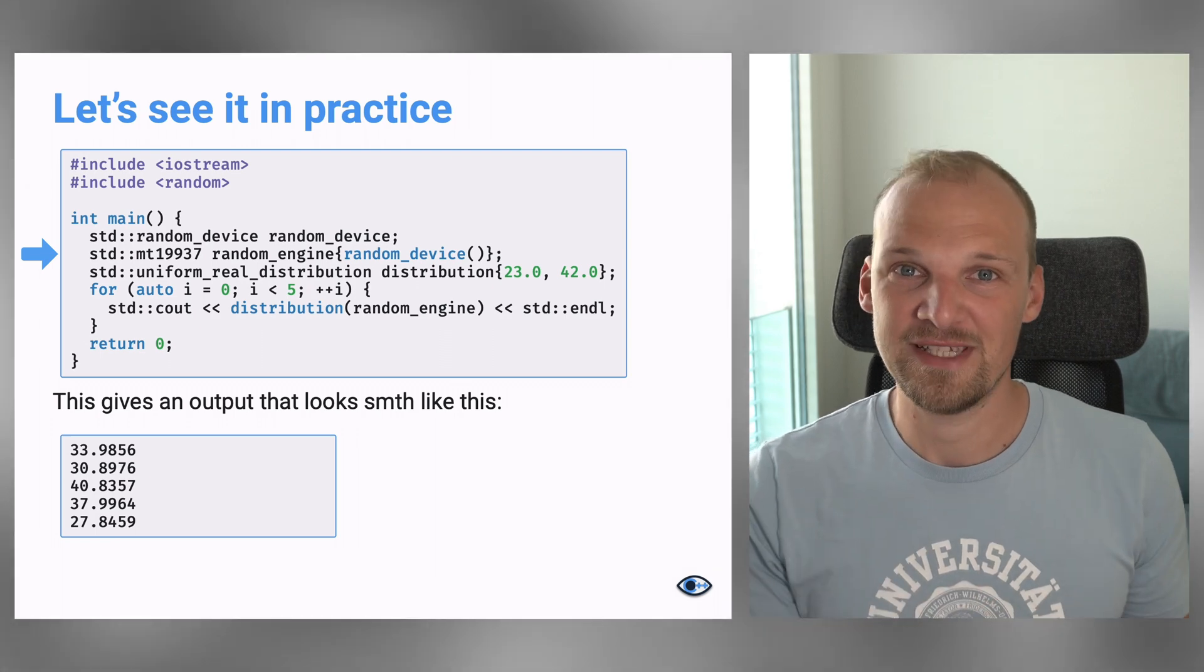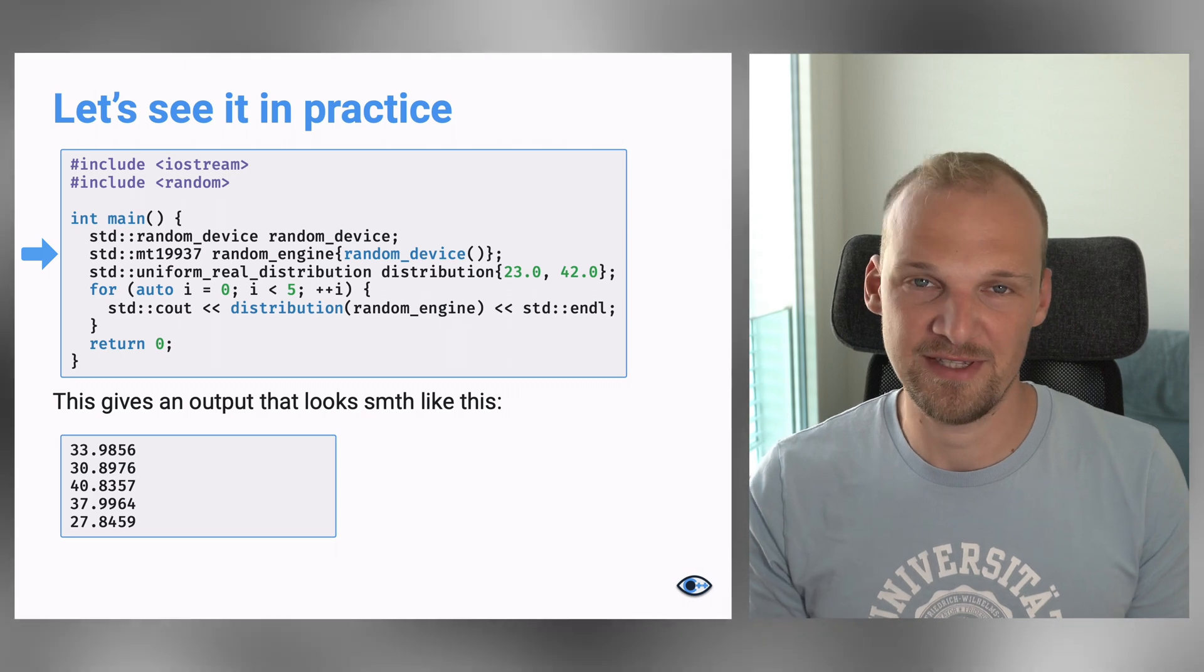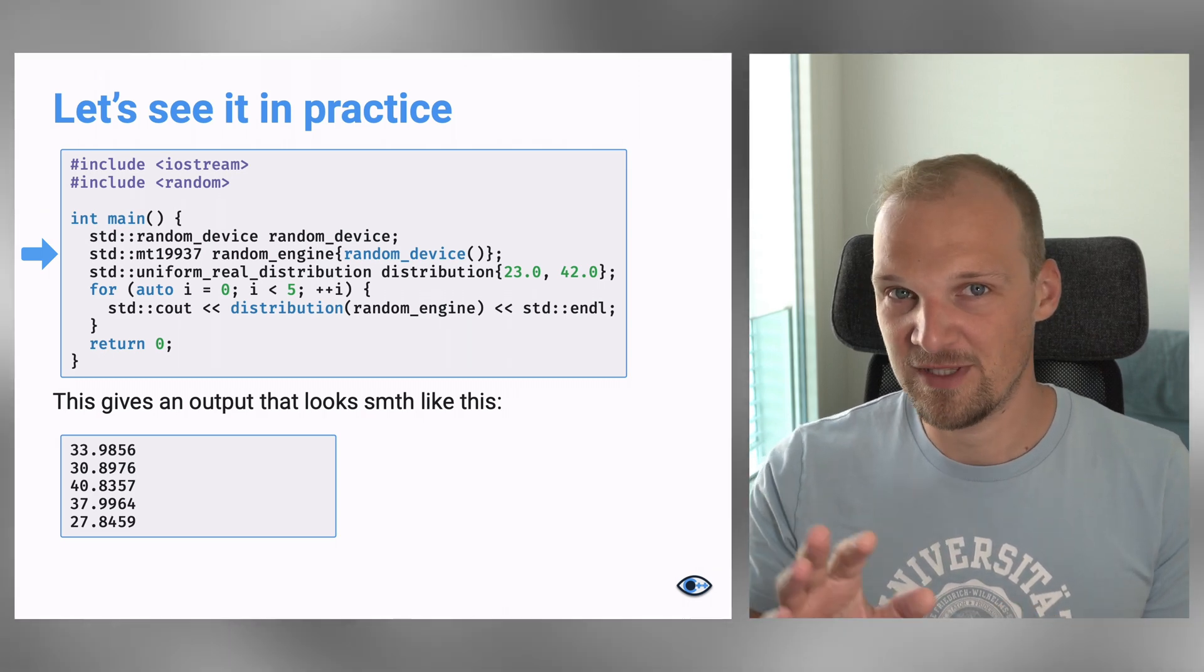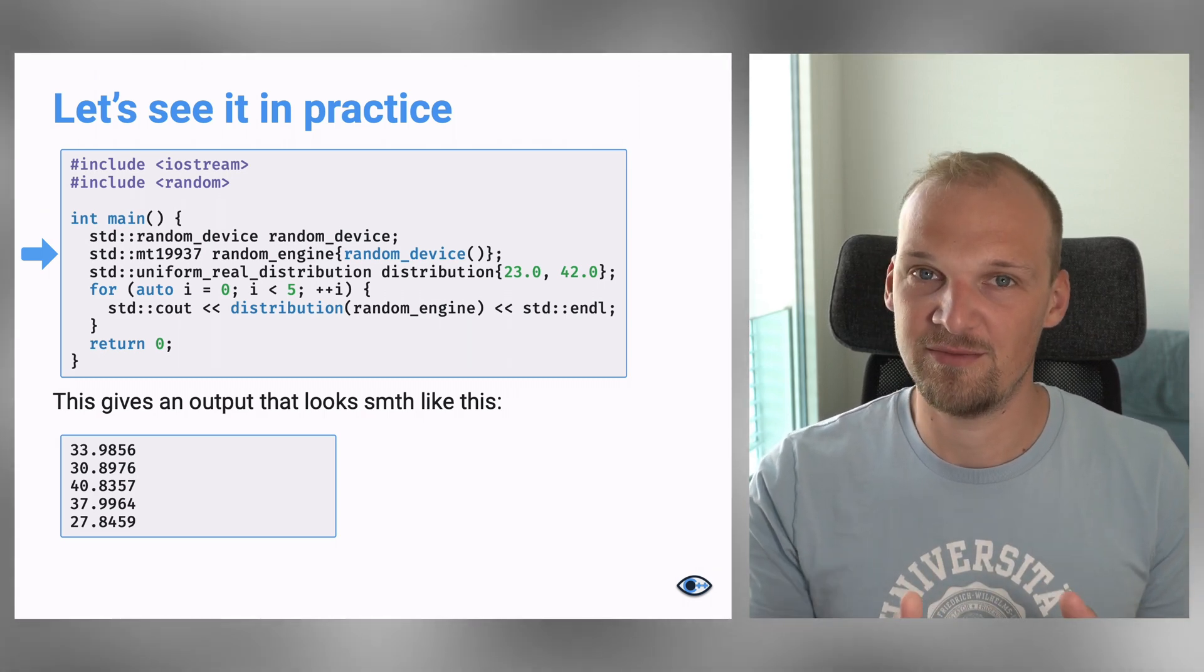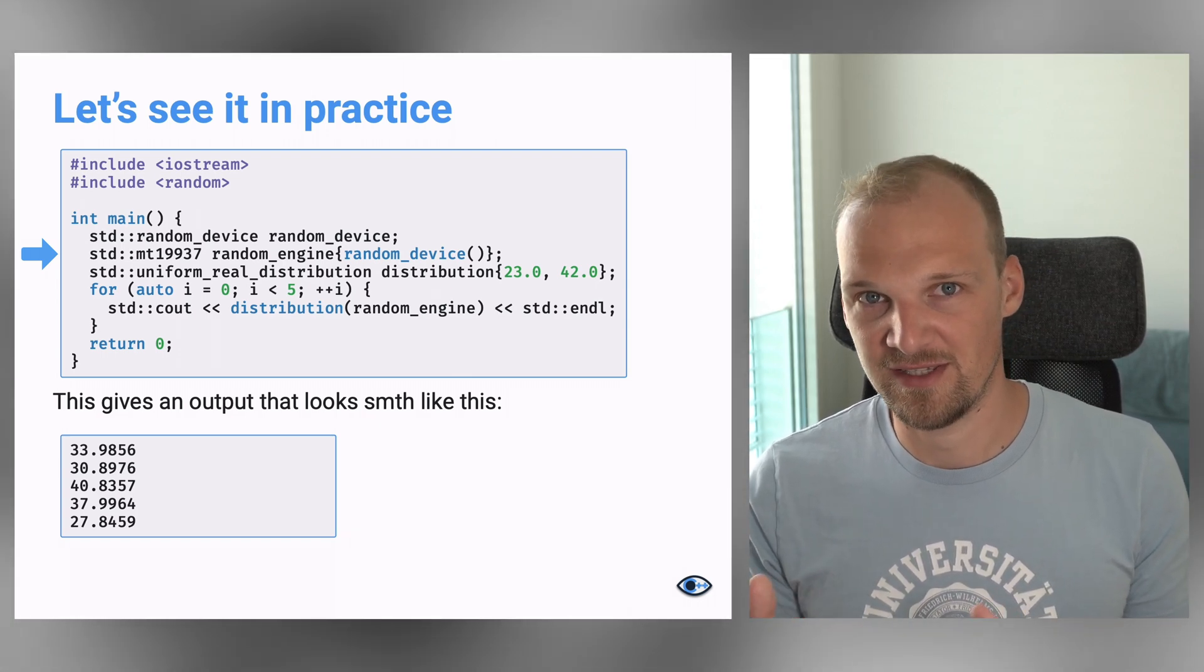So, we generate this engine and we pass it this random device. And this is some new syntax that we haven't seen before. You can see that we have this object random device, but we use it as if it is a function. And this is something that is called a functor in C++.